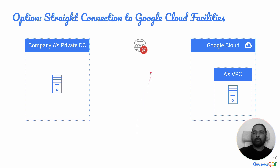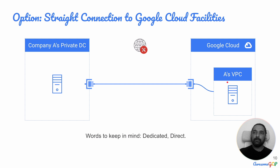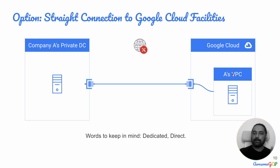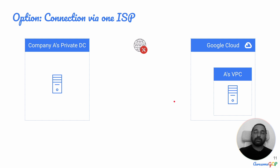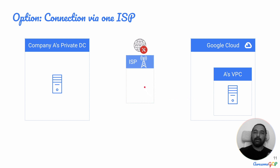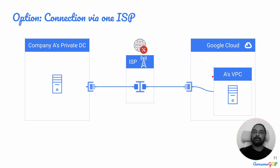The other option is to avoid the public internet altogether and draw a straight connection from your private data center to Google Cloud. For a straight connection you need those locations to be fairly close together. The two types related to a direct line are dedicated interconnect and direct peering. These require proximity to the Google Cloud facility. Alternatively, if you're not close to a Google Cloud facility, you can go via an ISP who has a connection to Google Cloud — your private data center connects to the ISP, and the ISP connects to Google Cloud.